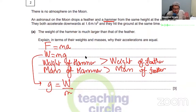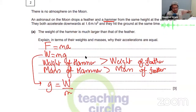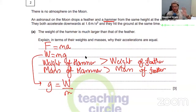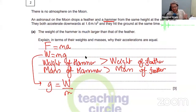This is the reason why the accelerations are equal — this is why they fall together. For the hammer, weight is more and mass is more. For the feather, weight is less and mass is less. The ratio of weight to mass is the same for both — so there is no difference in acceleration, which is why they fall together.